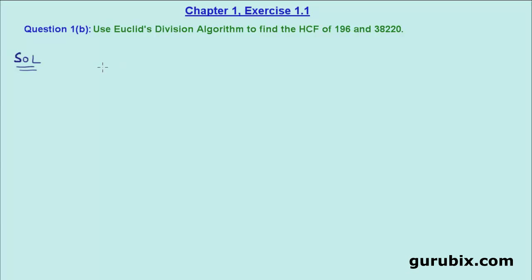Here is the question: to find the HCF of 196 and 38,220 by using Euclid's division algorithm. Let us see how to solve this question.